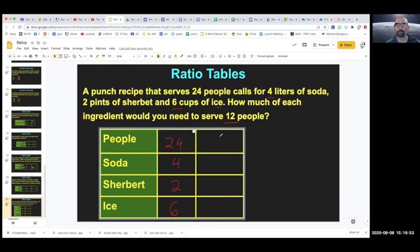So now it's asking, how much of each ingredient would we need to serve 12 people? So let's, they give us the people as 12. So what do I have to do to 24 to make it 12? Well, I have to divide by two, right? 24 divided by two is 12. So I have to divide by two on all of these. Four divided by two is two. Two divided by two is one. Six divided by two is three. Easy, right?